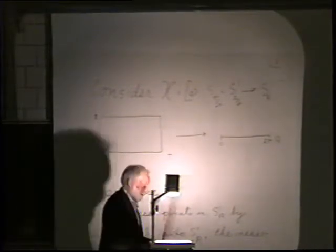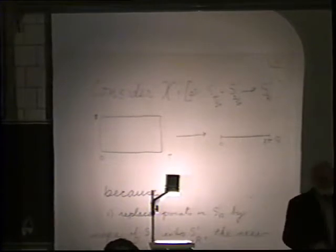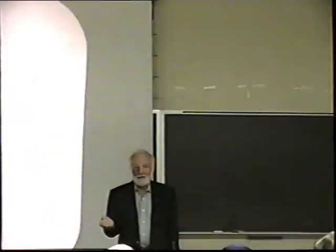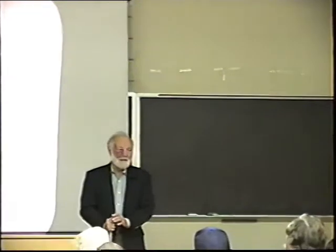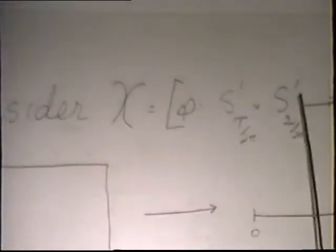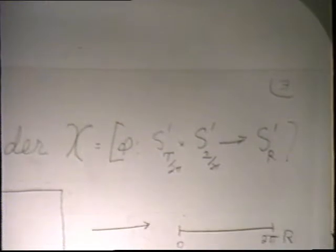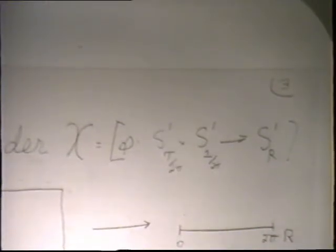Think about the philosophy I enunciated in the first lecture: you're supposed to replace points in a manifold by loops on the manifold. The simplest manifold we want to talk about is a circle. So I'm going to take the exercise of talking about maps of a circle into a circle. The target circle will be of radius R. Loops on a circle of radius R — the set of all such maps — will be our new manifold.